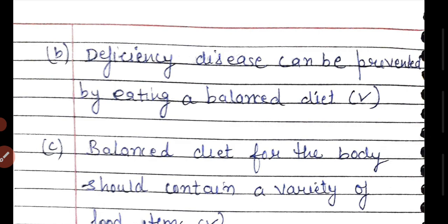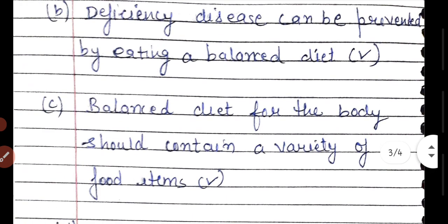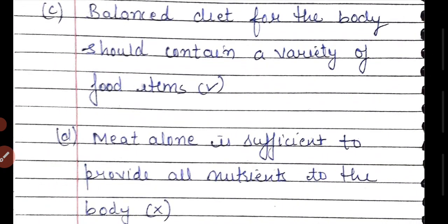Deficiency diseases can be prevented by eating a balanced diet — this is true. If we take a balanced diet, it means that in our meals the nutrients are in proper amounts. If the nutrients are sufficient in our plate and we eat them, then deficiency diseases will not happen. Also, a balanced diet for the body should contain a variety of food items — this is also correct. If we take different variety of food items, they increase our nutrition value and provide all the nutrients necessary for our body.